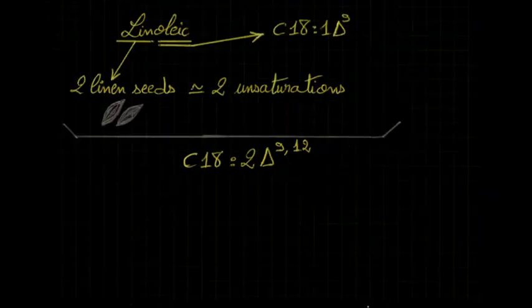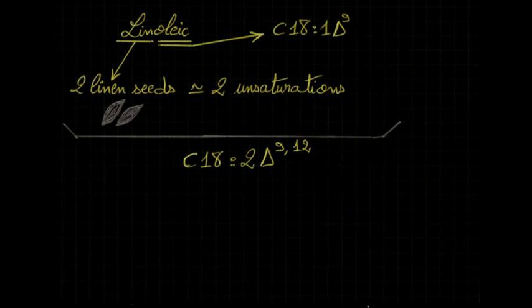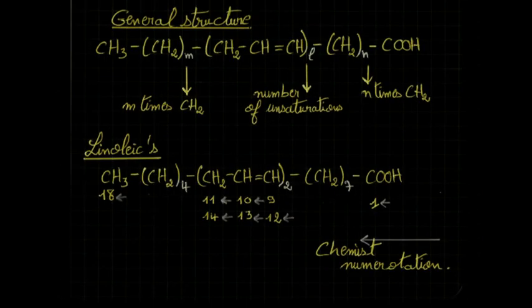For linoleic acid, I need you to picture the image of two linen seeds and associate that to the word lin. When you hear linoleic, the two seeds come to your mind, meaning we got two unsaturations. Since the second part is oleic, it means our first unsaturation is on the ninth carbon, and we have a total of 18 carbons. That's how we get C18:2 Δ9,12. The number of the second unsaturation is 12 because that's how things go according to the general structure of the fatty acid.